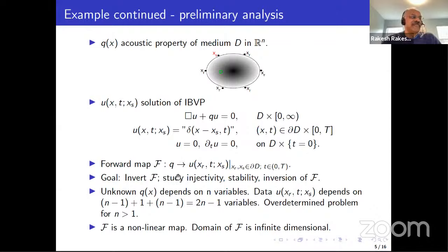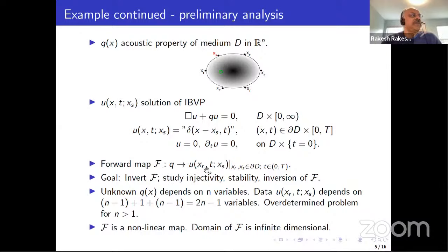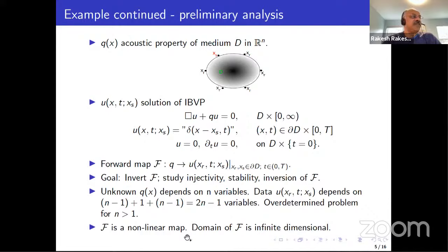There is no explicit formula for F — it's not as if I can write U as some integral of Q. The connection between U and Q is very complicated and indirect: U is a solution of a PDE with non-constant coefficient, there are no explicit formulas. So F is a nonlinear map, the connection between Q and U is complicated through a PDE, and trying to invert it is a non-trivial problem. There is no simple formula connecting U to Q — not like a Radon transform or Fourier transform.